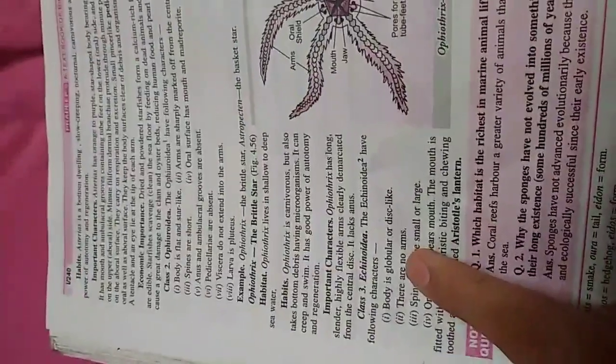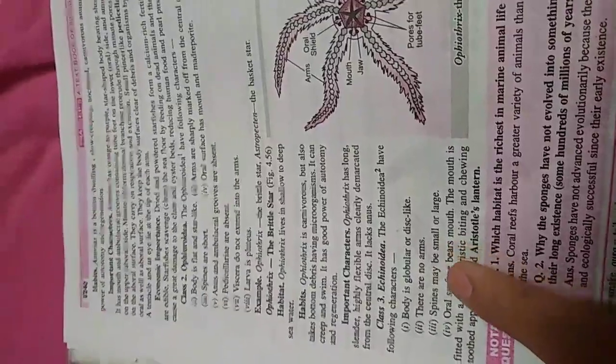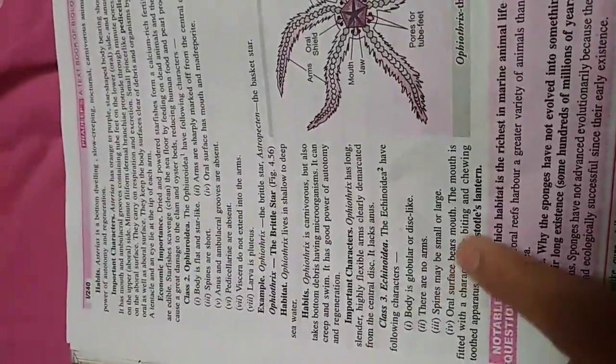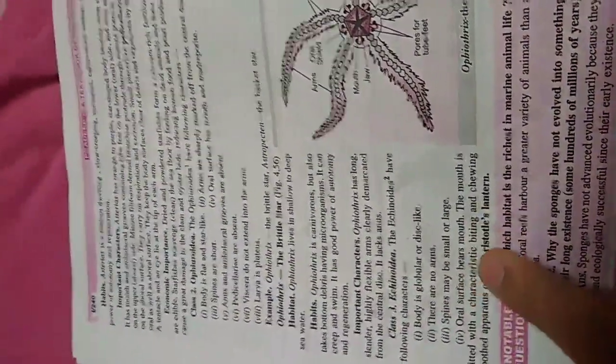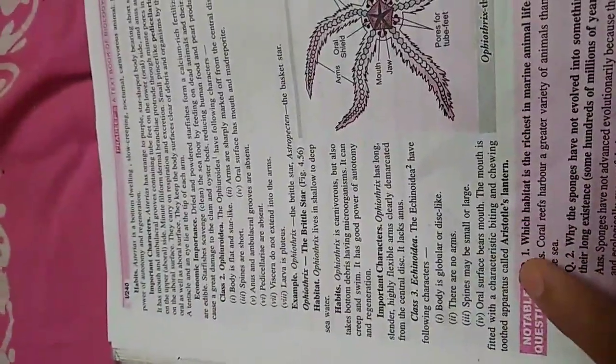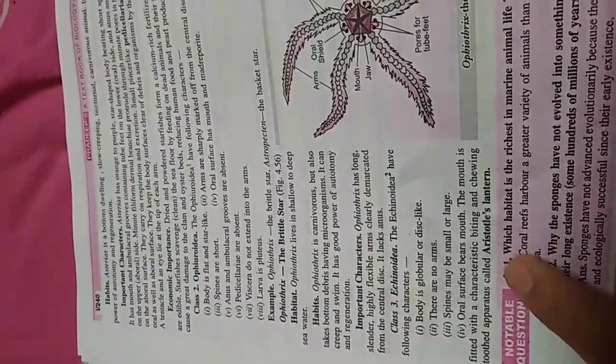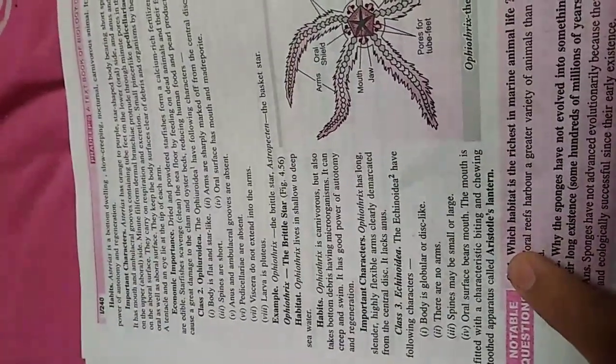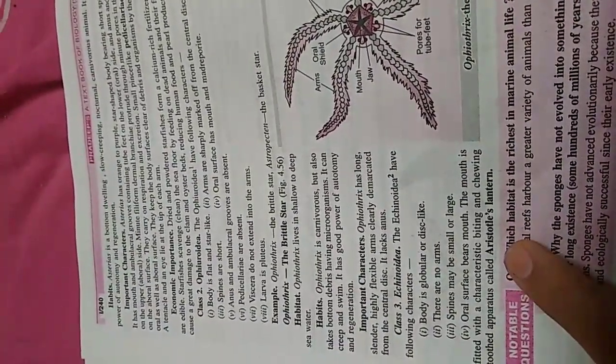The third class is Echinoidea. Echinoidea have the following characters: body is globular or disc-like. There are no arms. Spines may be small or large. Oral surface bears mouth. The mouth is fitted with a chewing apparatus called Aristotle's lantern.